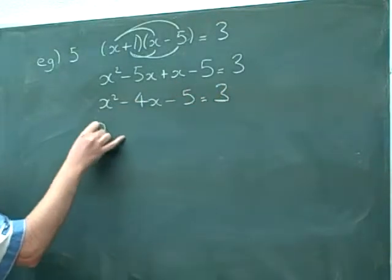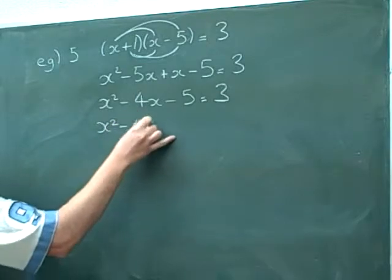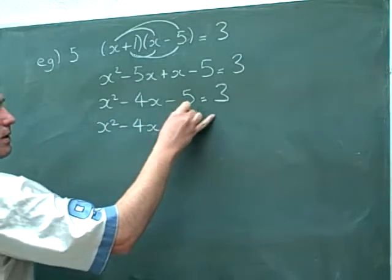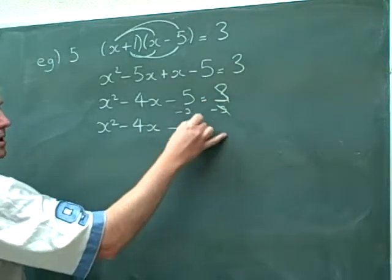And we need to bring the 3 to the other side. So as it's a positive 3, when we bring it to the other side, it becomes a negative 3. And negative 5 take away 3 is negative 8.